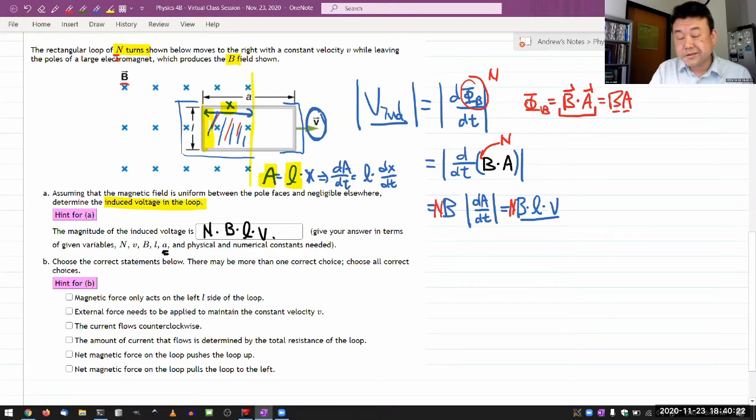It doesn't depend on a, and that's actually to be expected, because the actual width of the loop doesn't matter. It's how quickly it's changing. It's the time derivative relationship that counts. That's it for the magnitude. Let's look at the next multiple answer question. Correct statement below. There may be more than one correct choice, so I need to read all.